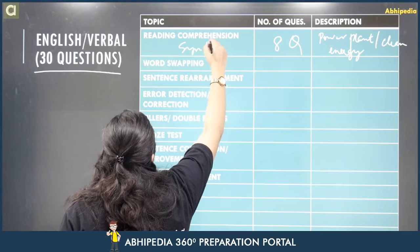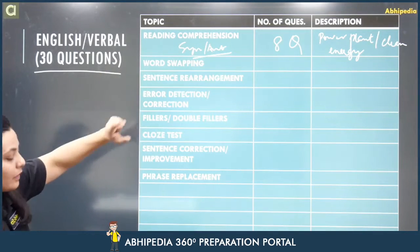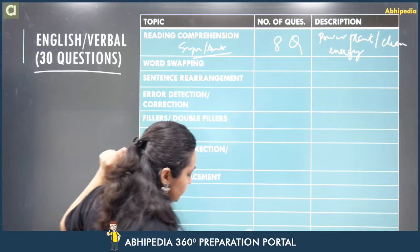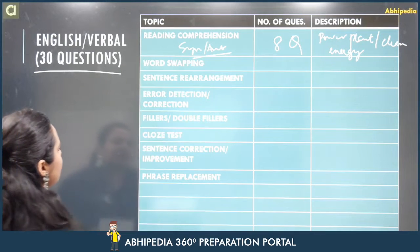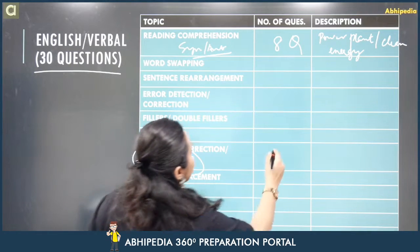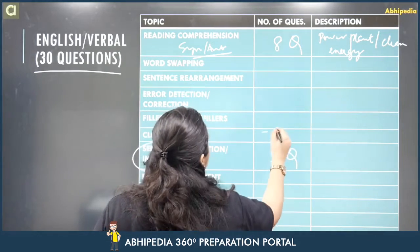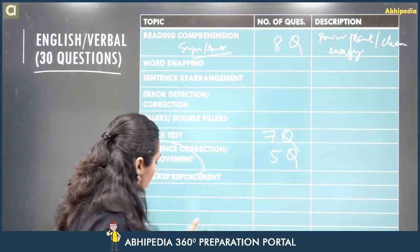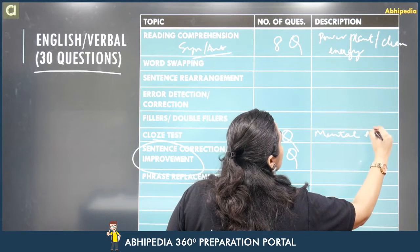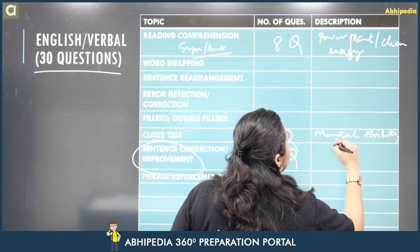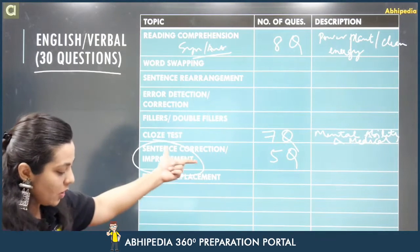RC mein synonyms, antonyms, and a bit of grammar were asked — wo toh RC ke through poochte hi hain. Then there were sentence improvement questions — five questions. After that, you had your cloze test — seven questions. The cloze test topic was somewhat related to mental ability and medical facilities, so it was a medical-related passage.